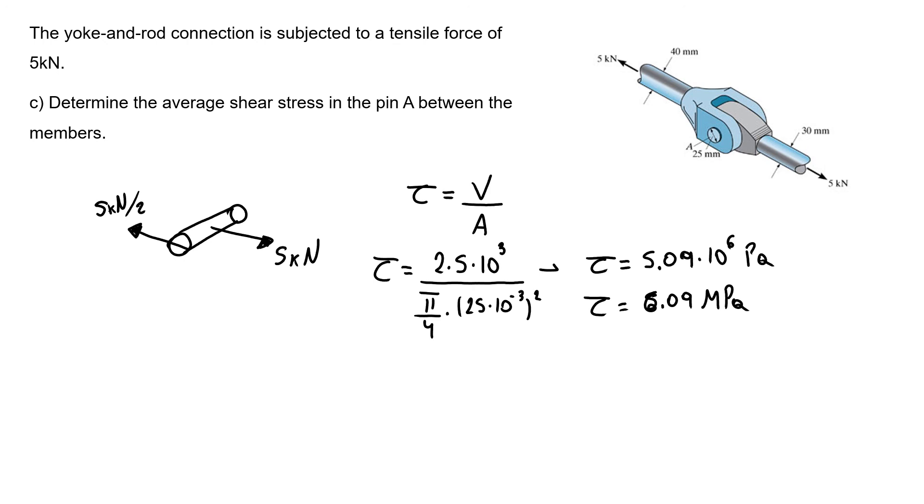For double shear stress, we can alternatively use the formula: force over 2 times area. Using the given force of 5 kN, this gives the same result.